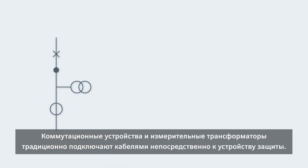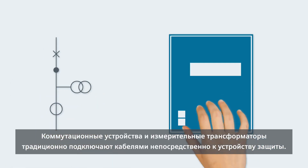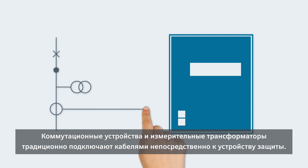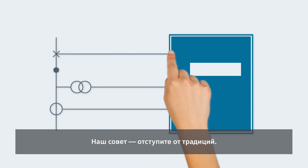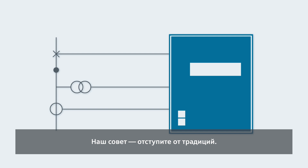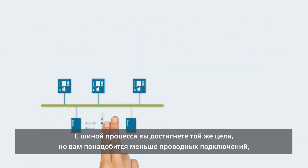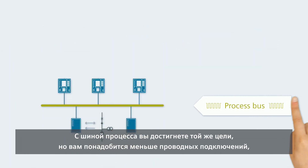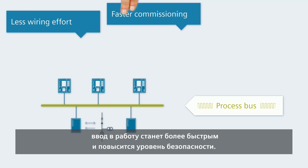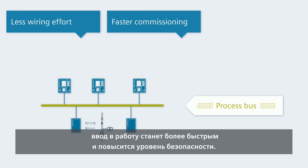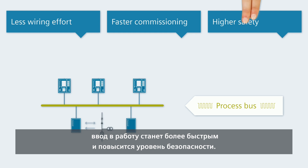Switching devices and instrument transformers are traditionally wired directly to the protection device. Our tip? Break with tradition. With a process bus you achieve the same goal, and that with less wiring effort, faster commissioning, and higher safety.